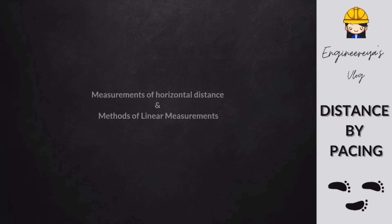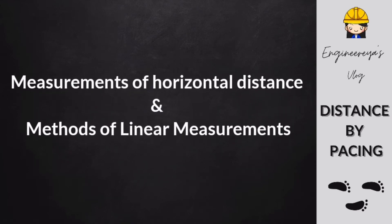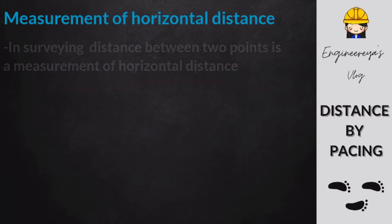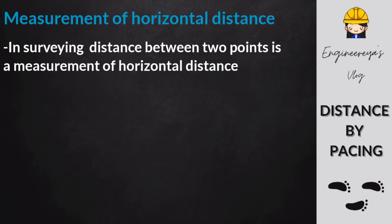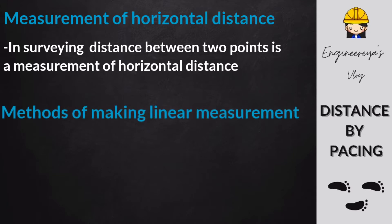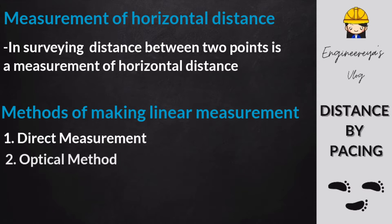We are going to talk about measurements of horizontal distance and different methods in making linear measurements. In surveying, distance between two points is a measurement of horizontal distance. There are various methods of making linear measurements and their relative merit depends upon the degree of precision required. Methods can be mainly divided into three heads: first, direct measurement; second, optical method; third, electronic method.